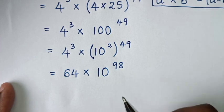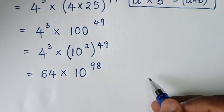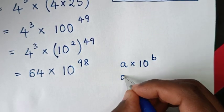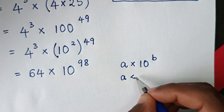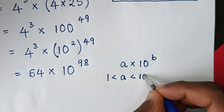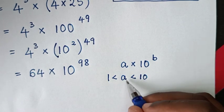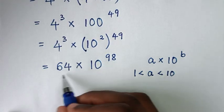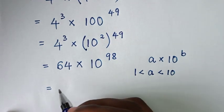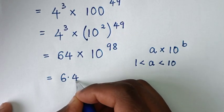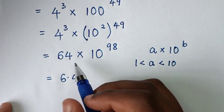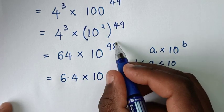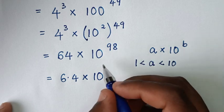Then from this step, we'll convert to standard notation, where standard notation is in the form of a times 10 power of b, and a should be greater than 1 and less than 10. So 64 becomes 6.4. We'll multiply by 10, so it will be 6.4 times 10, and that 10 power of 98 adds by power of 1, giving power of 99.